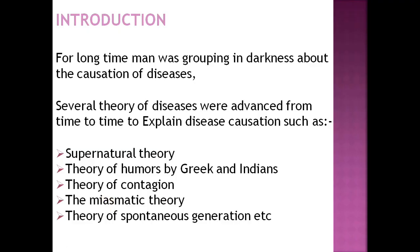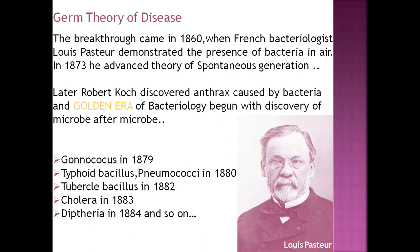There were a lot of theories present before the germ theory about how disease is caused. Those theories were supernatural theory, theory of humors (bad production in our body), theory of contagion, theory of miasma (miasma meaning bad air causing disease), and theory of spontaneous generation. All these theories lacked scientific evidence.